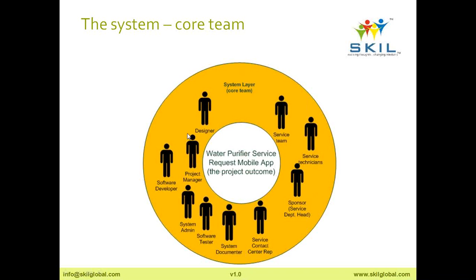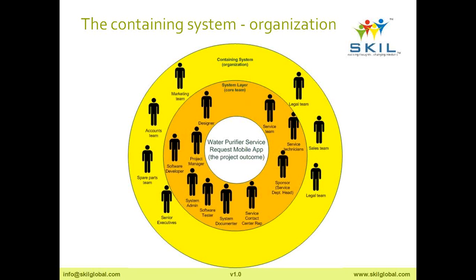Let's move to the next onion ring, known as the containing system, which can also be looked upon as the organization itself — in this case, the manufacturing company that manufactures the water purifying system. The entire organization will be known and treated as the containing system. Please notice this ring comprises people who may not be directly using the system. This is actually critical because more often than not, we are good at identifying the inner ring but fail to identify people in the containing organization. I have identified a few of them, starting with the marketing team.